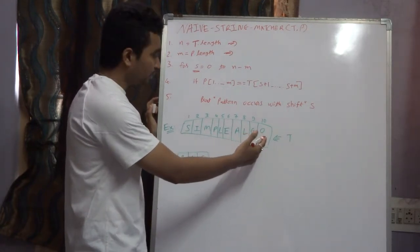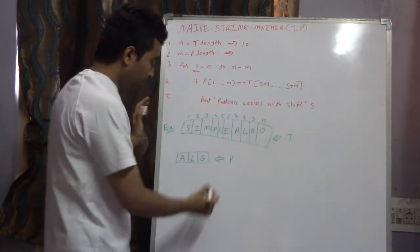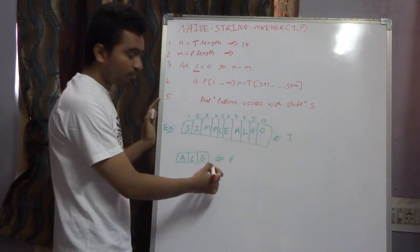The text is given and the length of text is 10, and the pattern is ALG with length of pattern equal to 3.